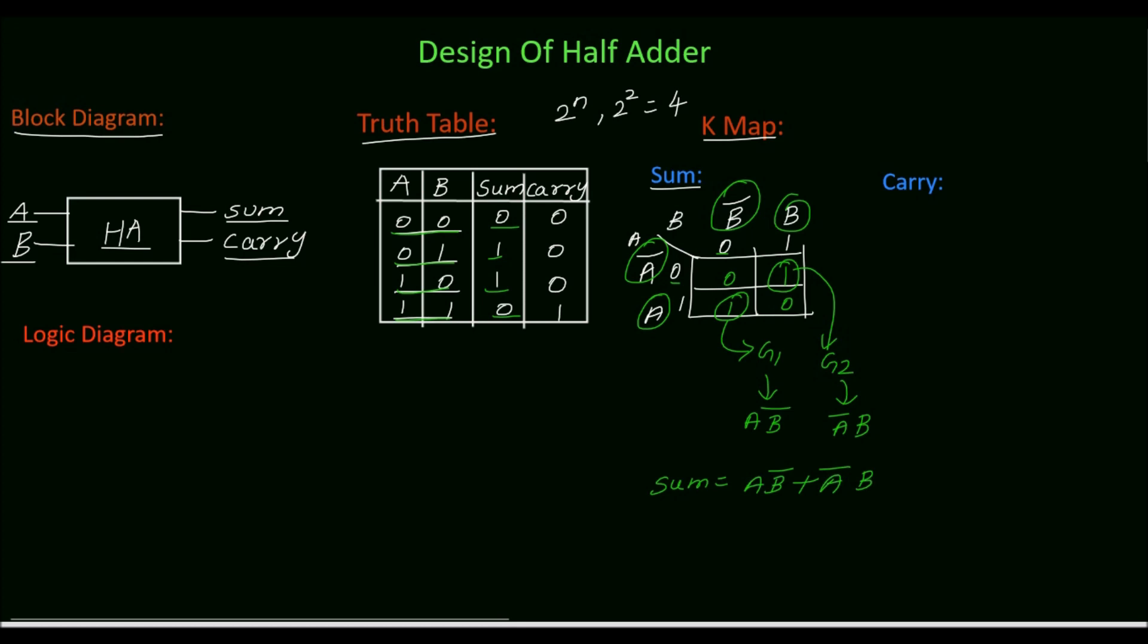Which is equal to A B complement plus A complement B. This is the expression of XOR gate which is A XOR B.